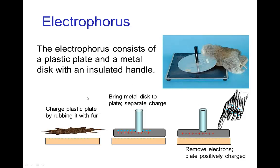This happens with the electrophorus. We have a plastic plate, we rub it with fur to get it charged, and then the electrophorus metal plate is brought onto the plastic bottom. The electrons are pushed away to the top of the plate because the plastic is negatively charged, and then we touch the electrophorus plate and the electrons run into our hand, leaving us with a positively charged plate.